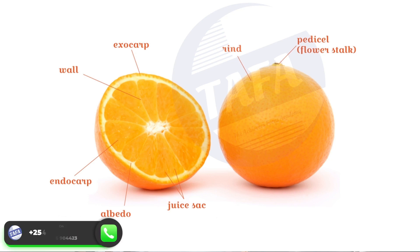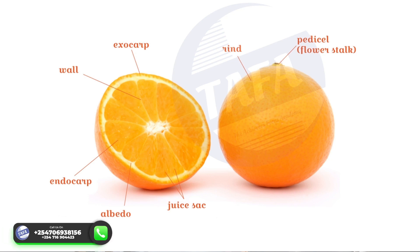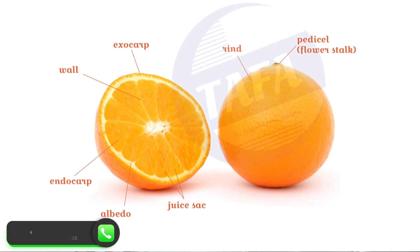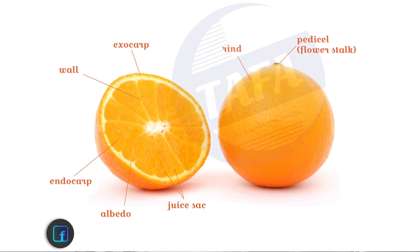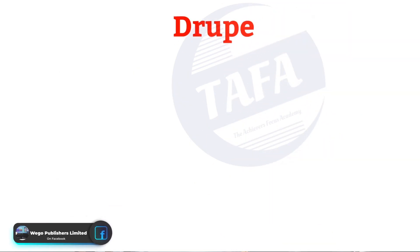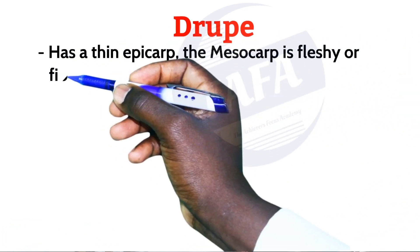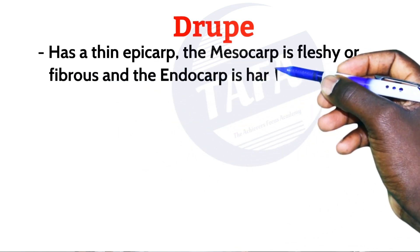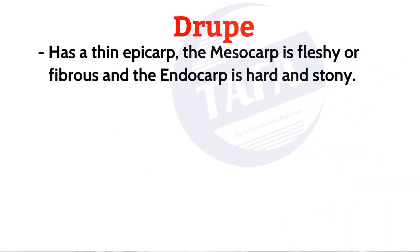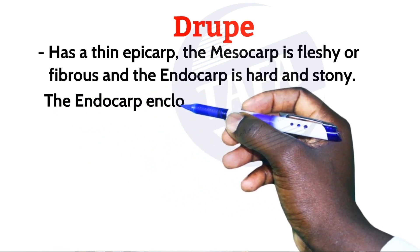The orange also contains succulent hairs that are attached to the endocarp. The second category of succulent fruits is the drupe. The drupe has a thin epicarp, the mesocarp is fleshy or fibrous, and the endocarp is hard and stony.